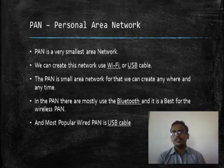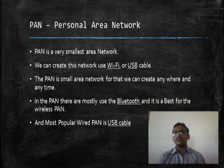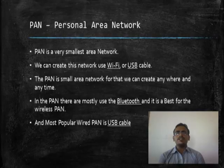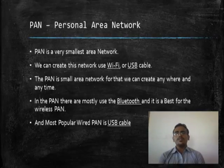PAN, Personal Area Network, is a very small network. We can create this network using Wi-Fi, data cable, Bluetooth, or other methods. PAN is a very small network — we can create it anywhere and anytime. Bluetooth is the best example for the wireless network and USB cable is the best for the wired network.